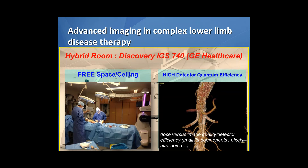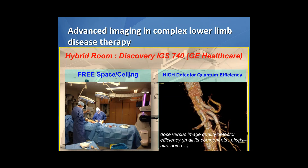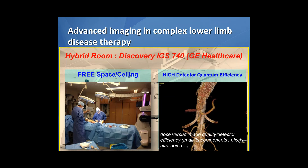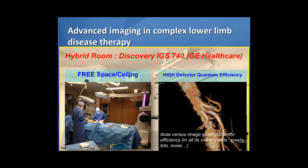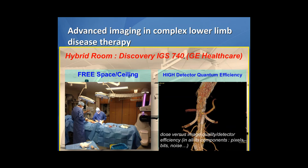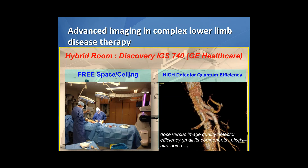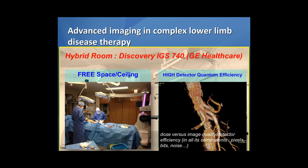There are two major advantages of this hybrid room and our Discovery IGS. On one hand, in a hybrid room as endovascular surgeons we need a lot of free space, and more particularly I prefer a free ceiling. There are a lot of screens, surgical lights and so on on the ceiling, so there is no space for advanced imaging technology. That's why with our Discovery we have a free ceiling as it is mounted on the floor.